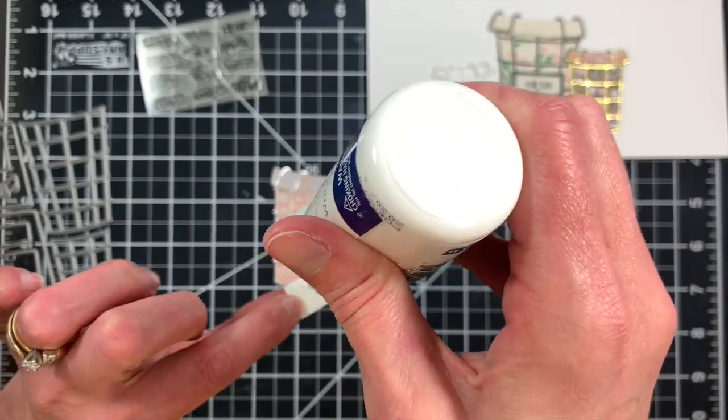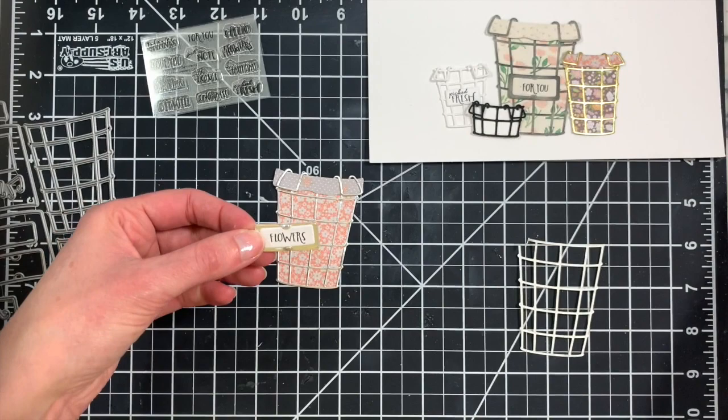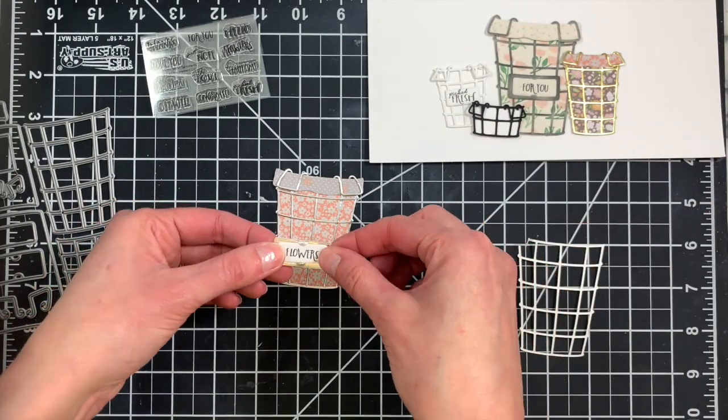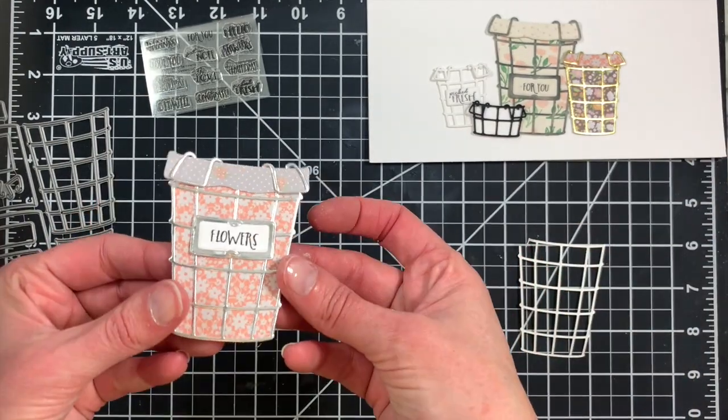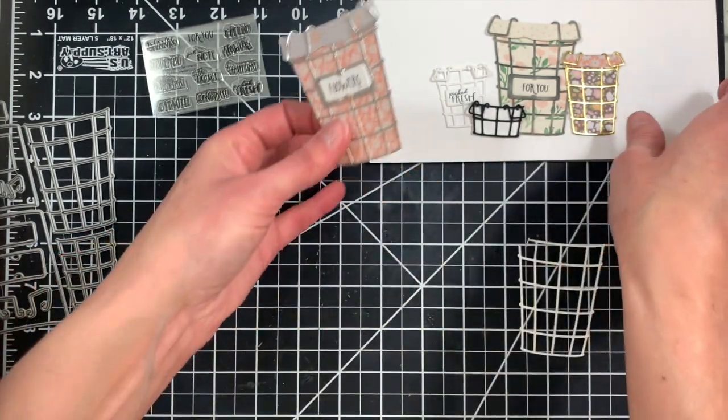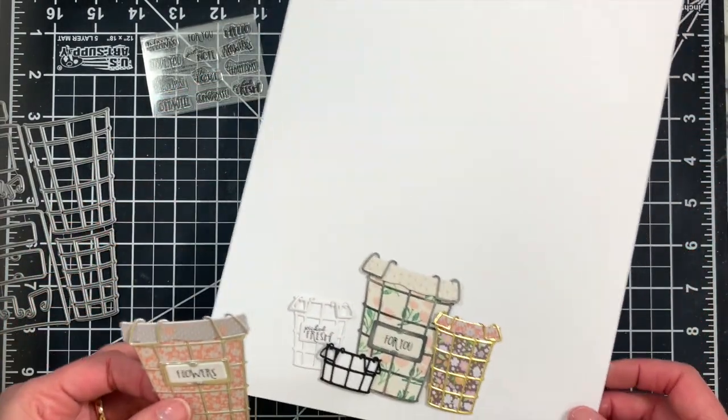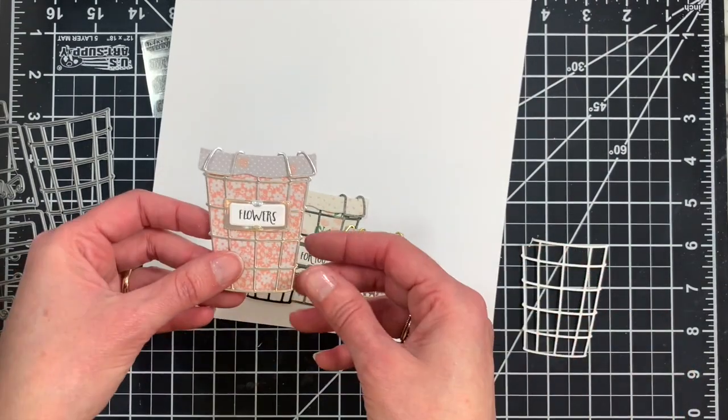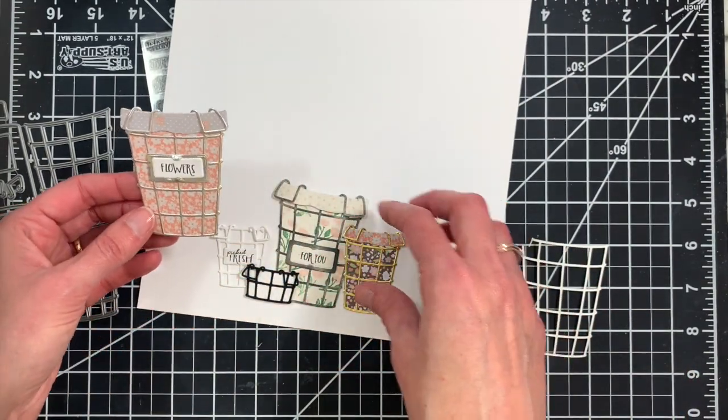And then we'll just add that to our basket. So cute! You can fill it with all sorts of stamped or die-cut flowers, or maybe even our botanic cuts carrots would be super cute in the large basket for maybe a thank you for a neighbor for sharing their garden goodness with you.